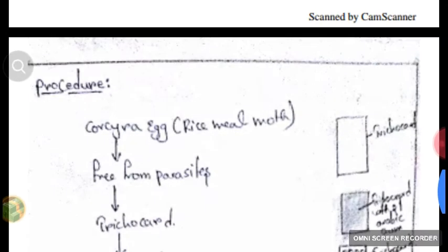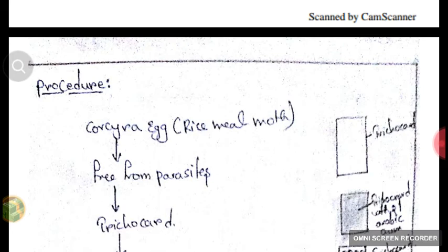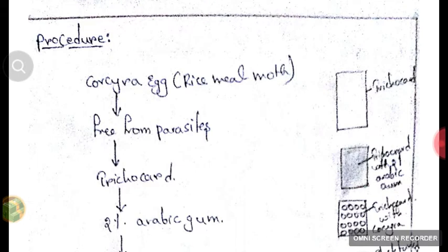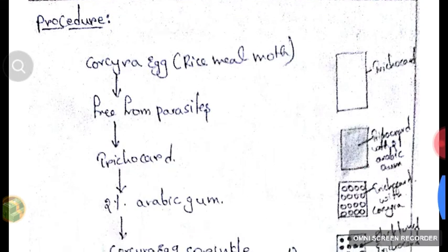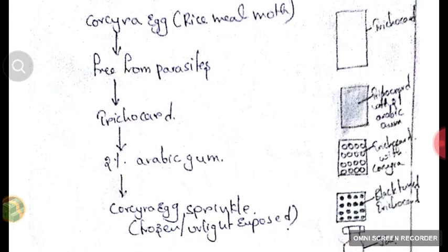We will take Corcyra eggs — Corcyra, also called rice meal moth — which are white in color. The Corcyra eggs should be free from parasites or parasitoids. We take a trichocard and apply 2% arabic gum to it. We sprinkle the Corcyra eggs with the help of a camel hair brush. The eggs should be either in a frozen state or exposed to UV light before sticking.